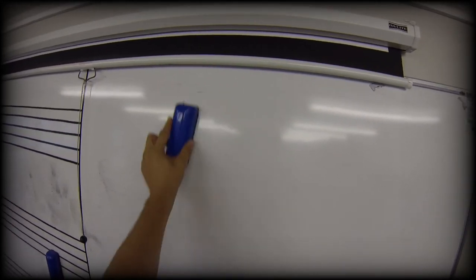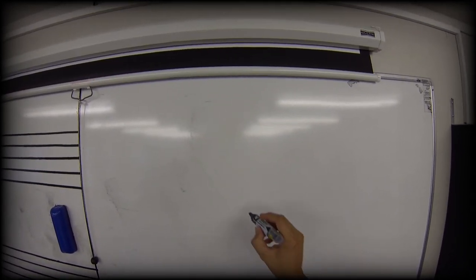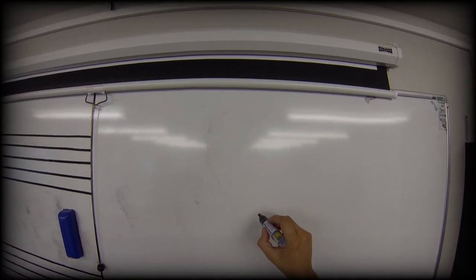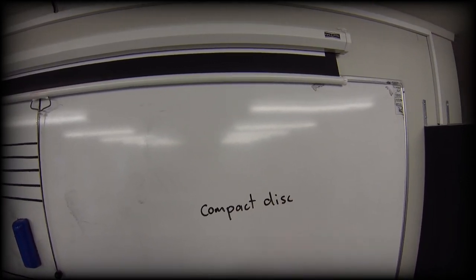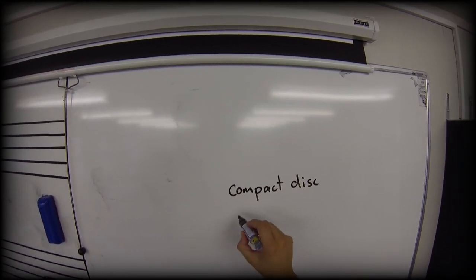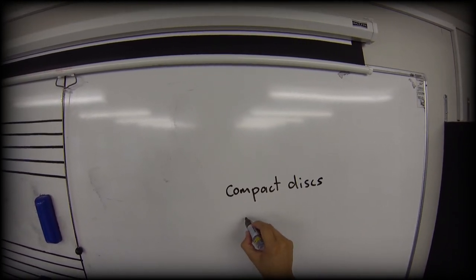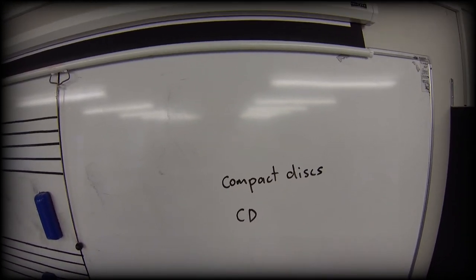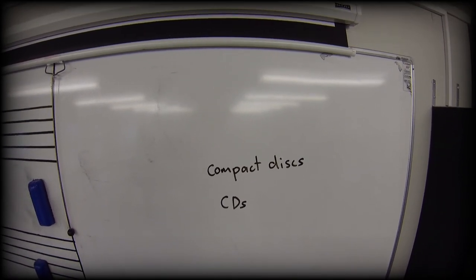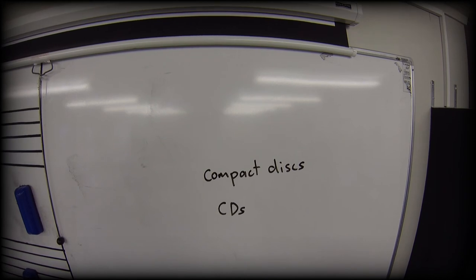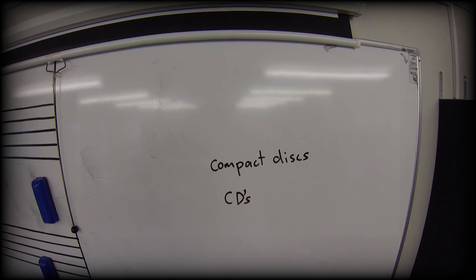The only time that you'll ever see apostrophes used to create plurals is if we have an abbreviation. We've got the word compact disc. And if I have three compact discs, I can just put an S on it. If I abbreviate this to the standard capital C, capital D, the S just looks a little bit odd connected into those capitals. And so you'll tend to find an apostrophe used in that situation.